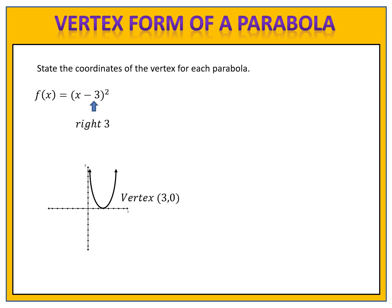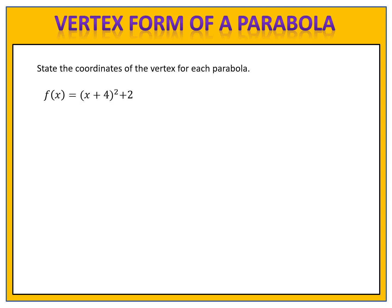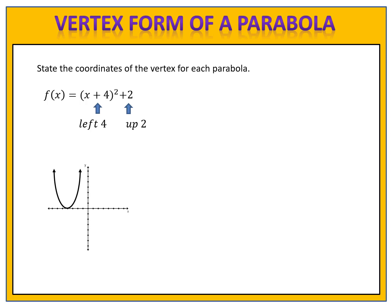And now we can look at some more complicated problems. How about f of x equals x plus 4 all squared plus 2? We begin with our parent function with the vertex at the origin, (0, 0), and identify the numbers that give us our shift. We have a plus 4 inside the parentheses and a plus 2 on the outside. The plus 4 inside tells us the parabola moves left 4 units; the plus 2 outside tells us it moves up 2 units. The vertex is at (-4, 2).